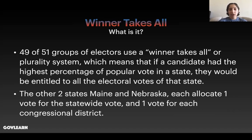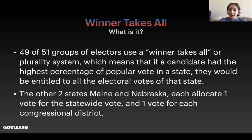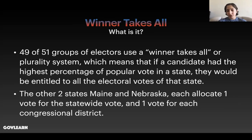The Electoral College operates on a winner-take-all system. 49 of the 51 groups of electors — including Washington D.C. — use a winner-takes-all or plurality system, which means that if a candidate had the highest percentage of popular vote in a state, they would be entitled to all of the electoral votes in that state. For instance, in a close state such as Florida, if one candidate obtains 49% and the other obtains 48%, the candidate with the higher percentage would win all 29 electoral votes. The other two states — Maine and Nebraska — each allocate one vote for the statewide vote and one vote for each congressional district.